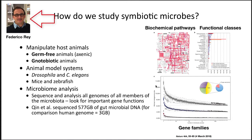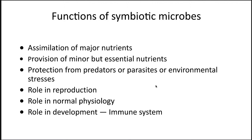Professor Frederico Wray is a world expert in using these types of mice to answer all sorts of interesting questions, including about aging and metabolic disorders. Important animal model systems include Drosophila, C. elegans, mice, and zebrafish. The functions of symbiotic microbes include assimilation of major nutrients, provision of minor but essential nutrients, protection from predators or parasites or environmental stresses, their role in reproduction, normal physiology, and development — including the immune system.